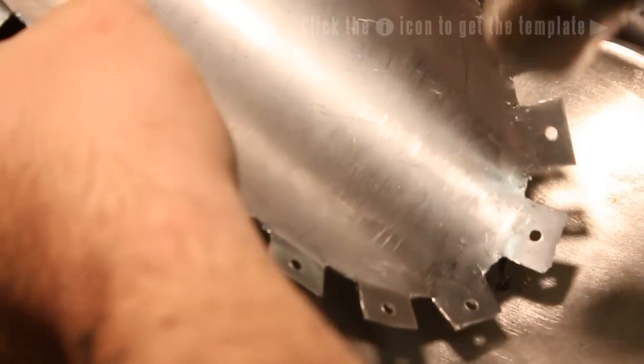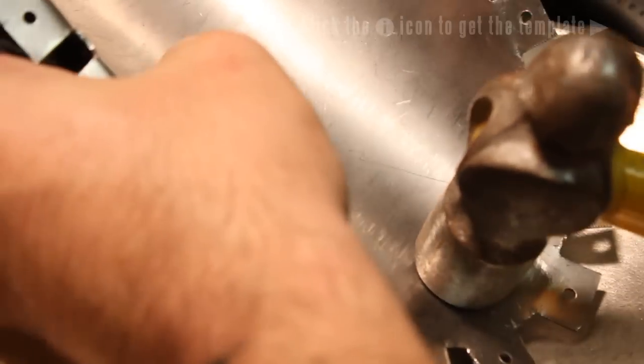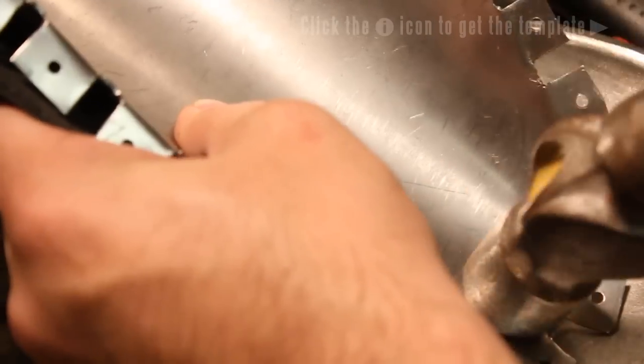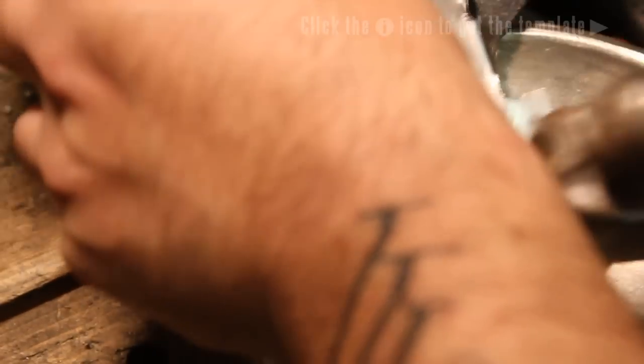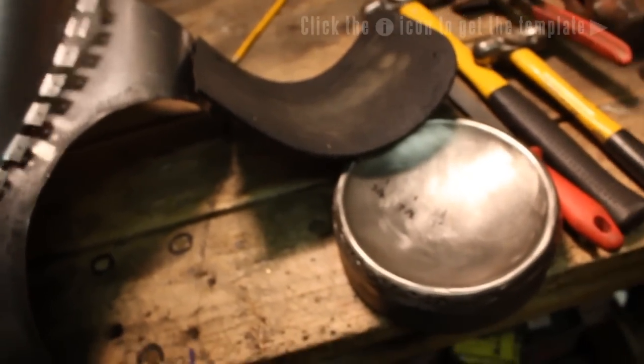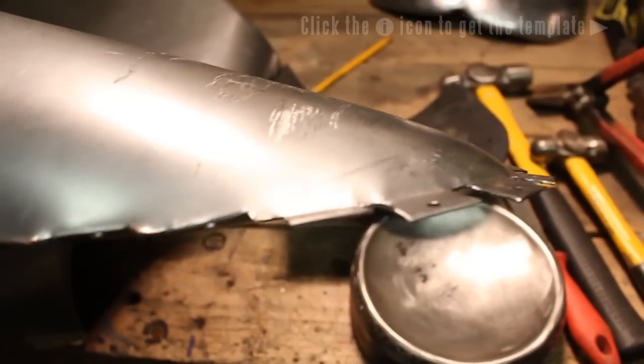But if you want to do it like I did it, you're going to have to use a dishing form or a dishing stump and just convince this metal to be a little bit more rounded at the top. It does not have to perfectly lay against the back, because as you put these pieces together, they will kind of bend a little bit and it will just come together and look right. You can see this side is done, the other side is not.